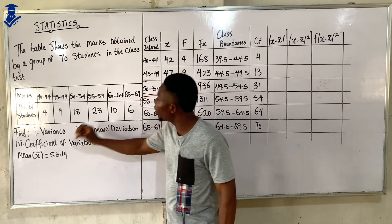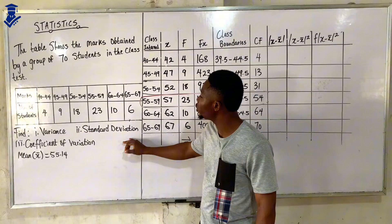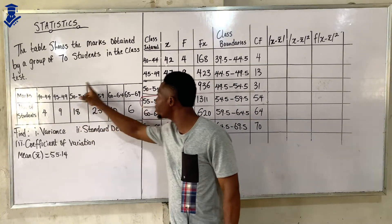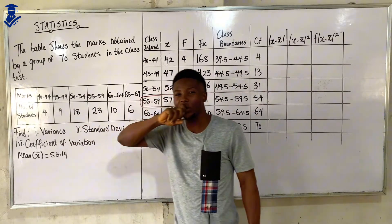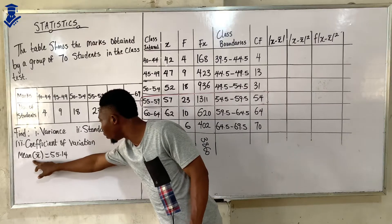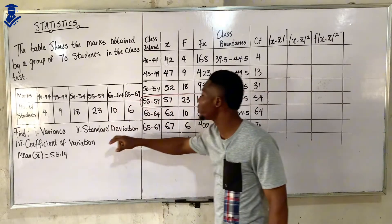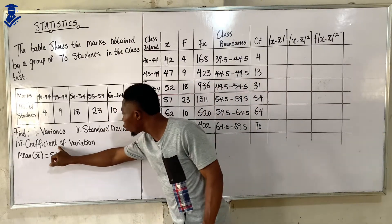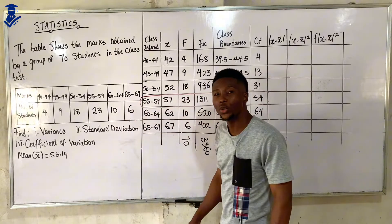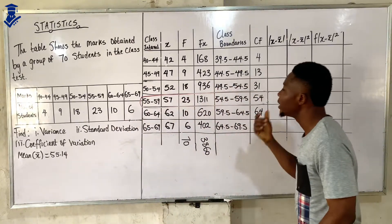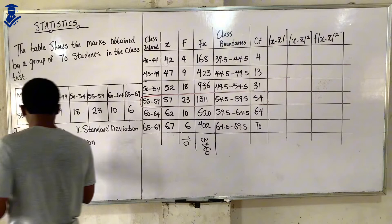We need to find the variance, standard deviation, and coefficient of variation from the given data. We are also given the mean: 55.14. The first thing we need to find is our variance.